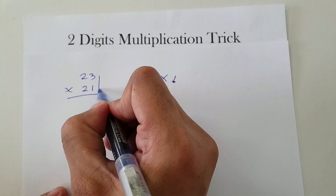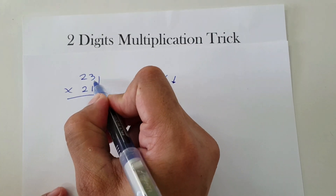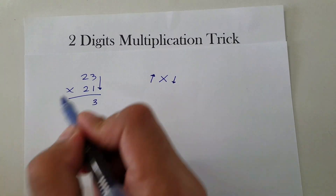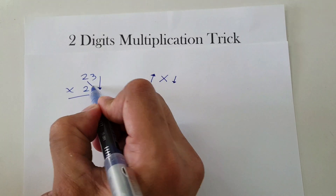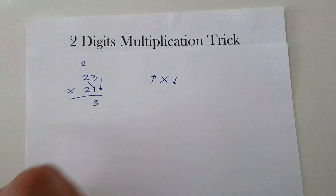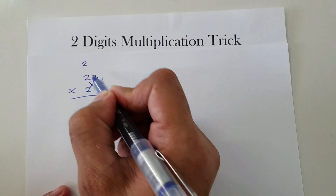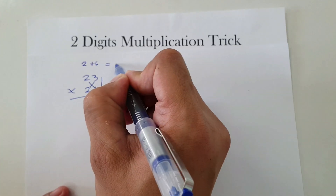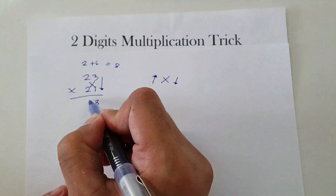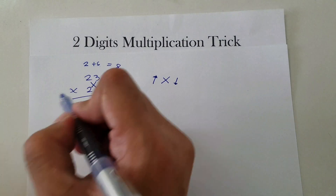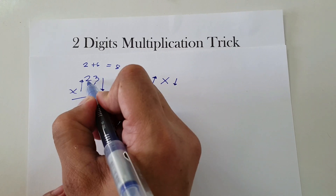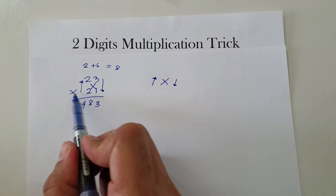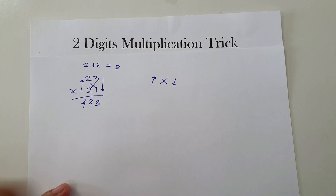For example, 23 times 21. First, down: 3 times 1 is 3. Then cross: 2 times 1 is 2, and 2 times 3 is 6; add them: 2 plus 6 is 8. Then up: 2 times 2 is 4. Therefore 23 times 21 is 483.